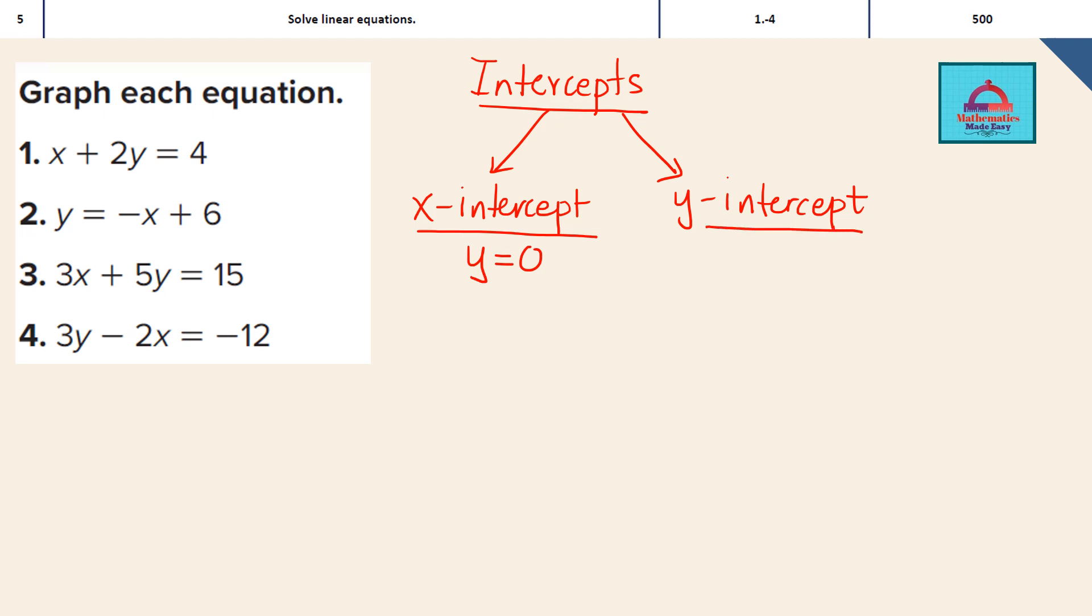And y-intercept is that point on the graph of the equation where it touches the y-axis. So x is going to be 0.